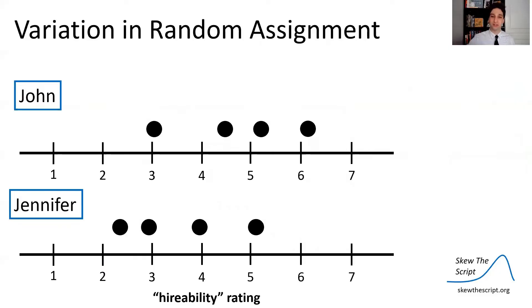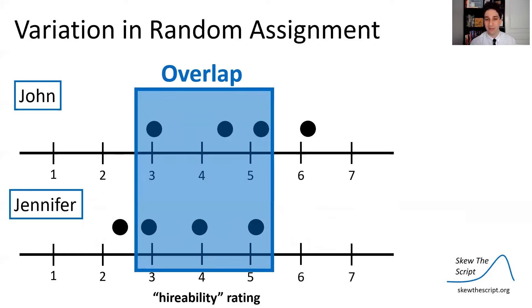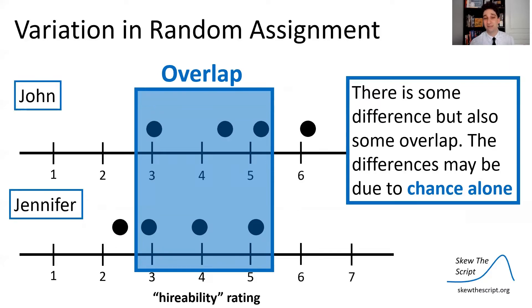Now let's look at the results of the study. Looking at four representative data points: for the John application materials we see different ratings on a scale of one to seven in terms of higher ability, and the same for Jennifer. When we compare these distributions, we see a lot of overlap — a lot of similarity in ratings of both John and Jennifer resumes. Maybe these differences are not large enough to say they're not by chance alone. Maybe we cannot prove discrimination in the higher ability ratings; maybe those small differences are by chance.